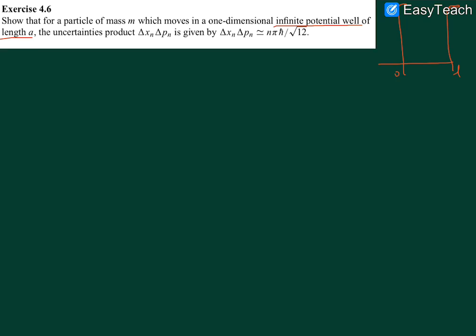One thing that we know is that the equation of the nth state is psi_n equals the square root of two over L, times sine of n pi x over L. This is the most important equation for this particular question. Now we move ahead to find the uncertainties in position and momentum.